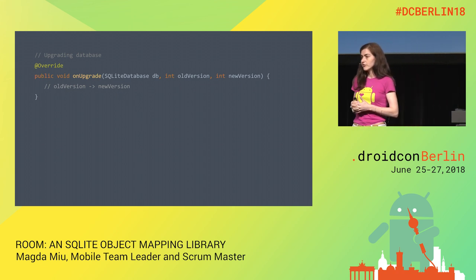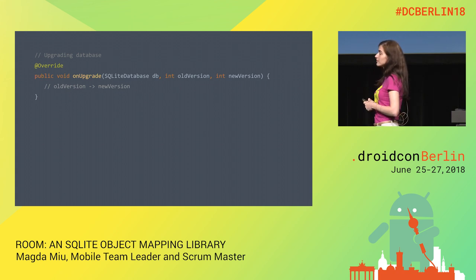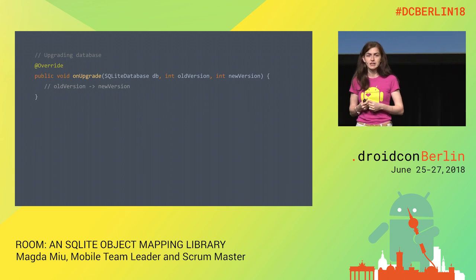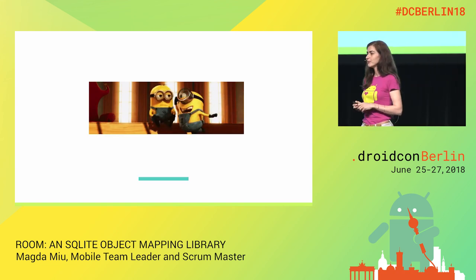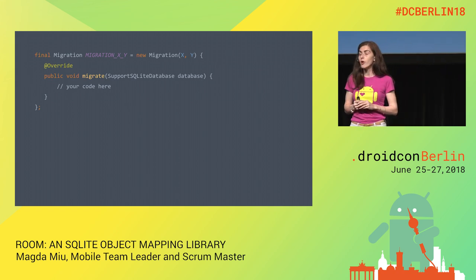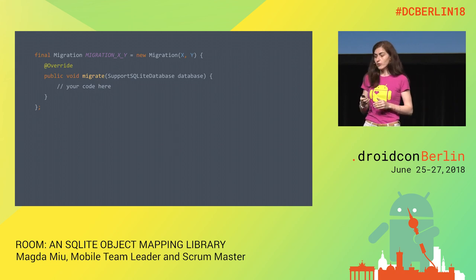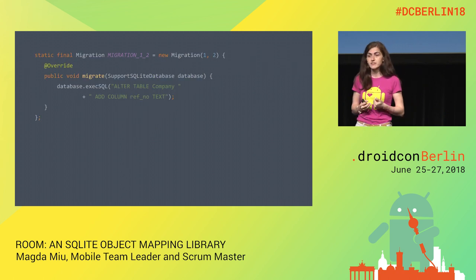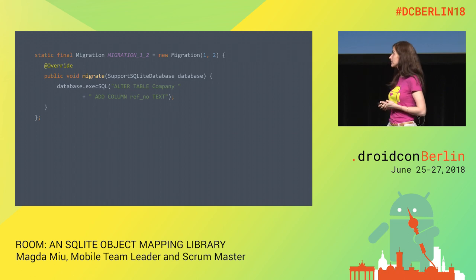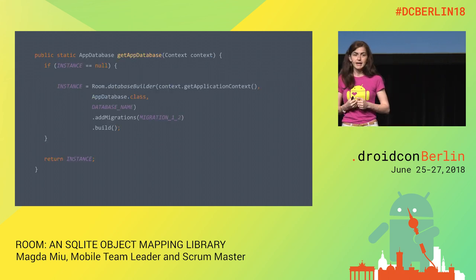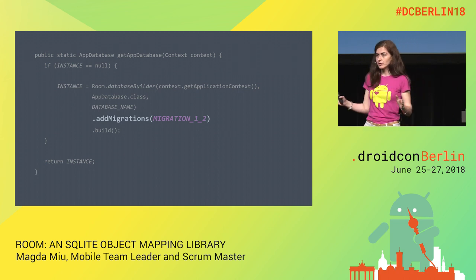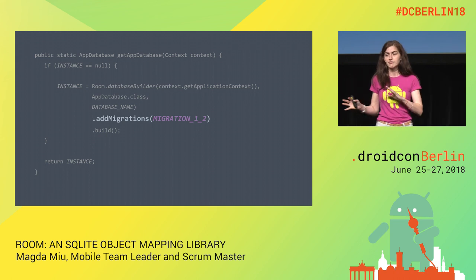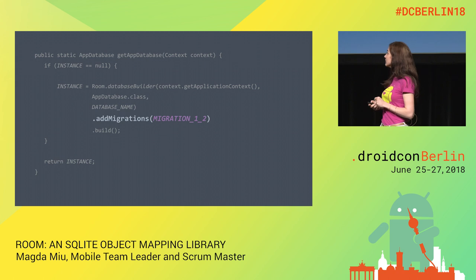With the SQLiteOpenHelper approach, you override the onUpgrade() method, which takes the database, the old version, and the new version. In Room, we have the Migration class and override the migrate() method. In our case, we just ALTER the company table by adding the new 'ref_number' column — that's the migration from version 1 to 2. To apply this migration, we use the addMigrations() method inside the database builder. If we have many migrations, specify them with commas.